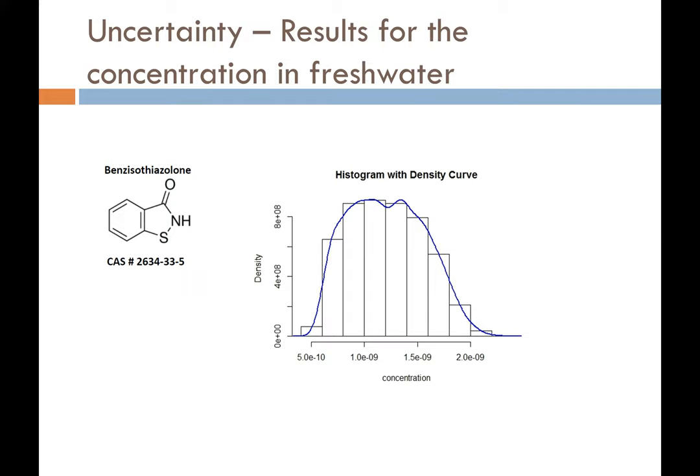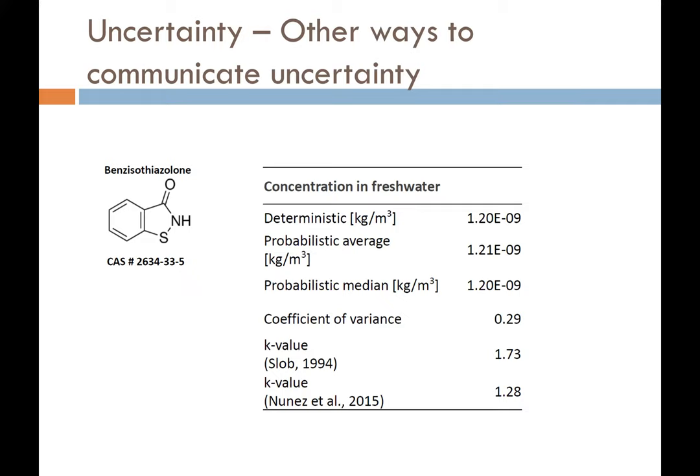By doing 10,000 samples of Monte Carlo simulations, the total running time is about eight hours. After running the uncertainty analysis, we get 10,000 results for this value. Here is the histogram from the simulations for the freshwater concentration of this chemical — we see the concentration mostly falls in the range from 5×10⁻¹⁰ to 2×10⁻⁹ kg per cubic meter. Our tool provides not only the histogram of the results, but also a summary table for users to better understand the uncertainty, including the deterministic value, probabilistic average, probabilistic median, coefficient of variance, and k-values to describe uncertainties.